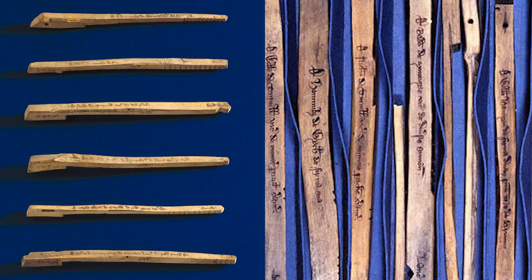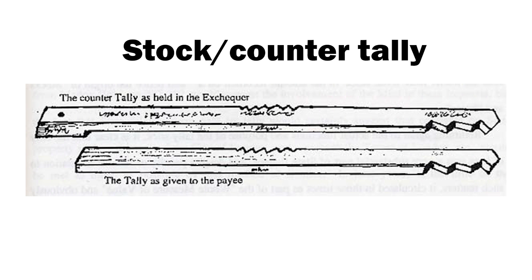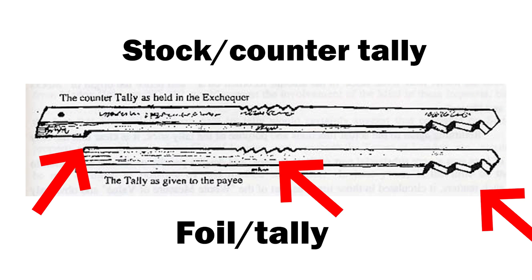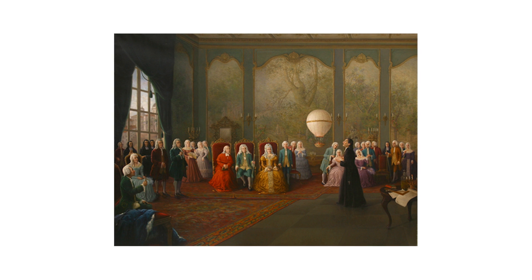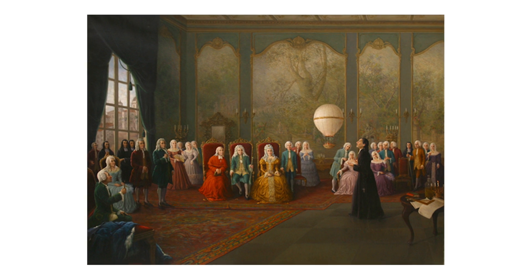To enhance security, the halves were made unequal in length. The stock or the longer portion was given to the lender and the foil or the shorter portion was given to the borrower. The distinctive irregularities of the split surface ensured that only the matching halves could be perfectly rejoined, preventing fraud and serving as legal evidence in medieval courts.